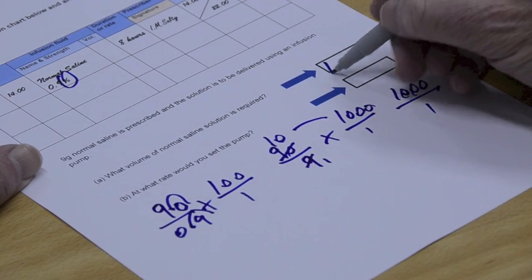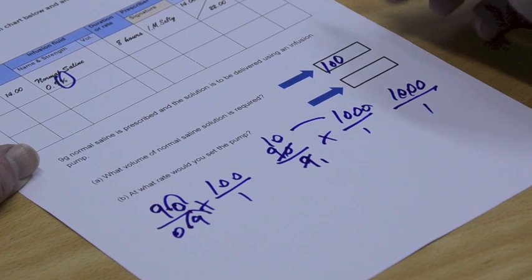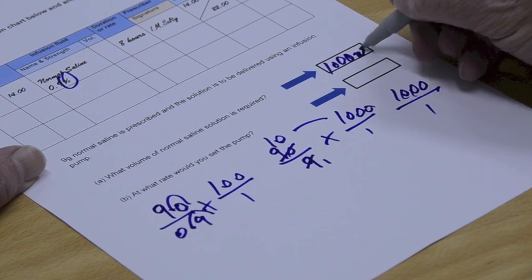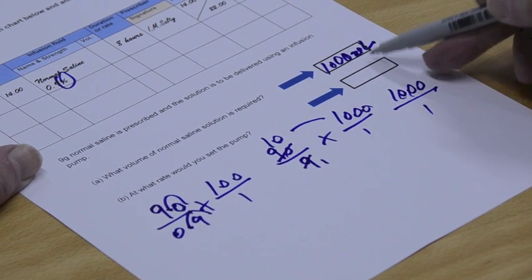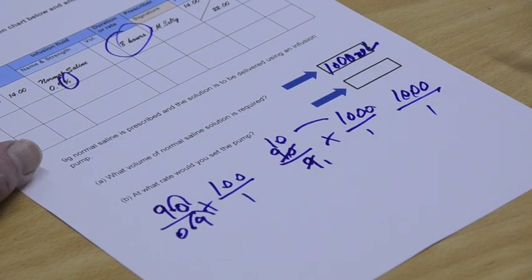So we've got our first answer here of volume, to be given over 8 hours, will be 1,000 ml. We haven't worked that out yet, all we've got is the volume so far. So it's going to be given over 8 hours, 1,000 ml.